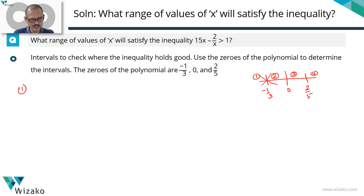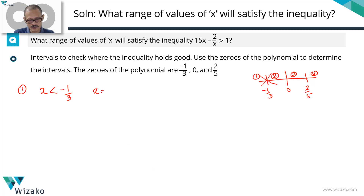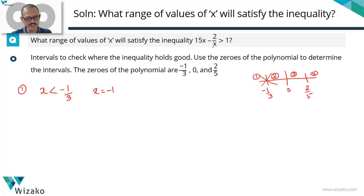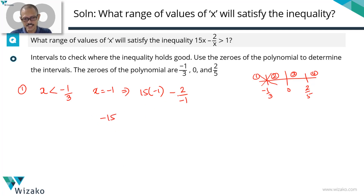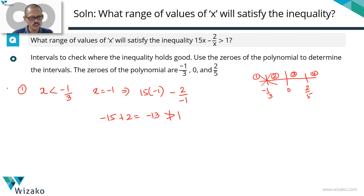Let's start with the first interval — values of x less than minus 1 by 3, which is approximately minus 0.33. We take a convenient number: x equals minus 1. Substituting into 15x minus 2 divided by x: 15 times minus 1 minus 2, divided by minus 1. That's minus 15, and minus of minus 2 makes it plus 2, giving minus 13 in total. We need the expression to be greater than 1, but minus 13 is not greater than 1. So the inequality does not hold good in the first interval.